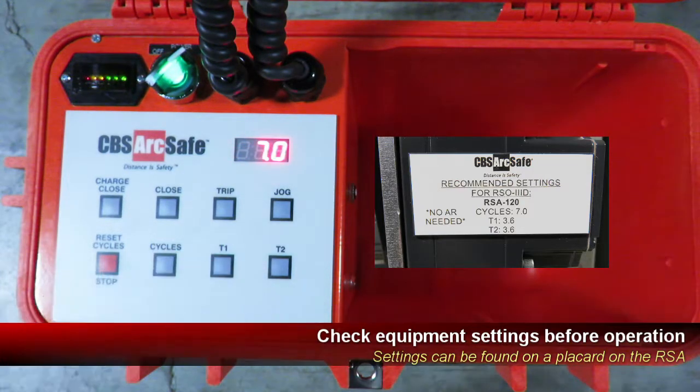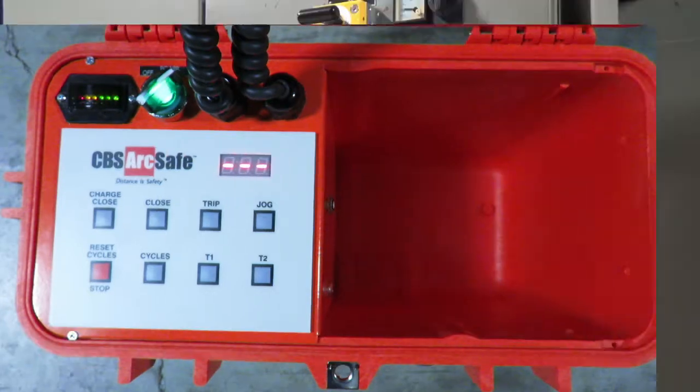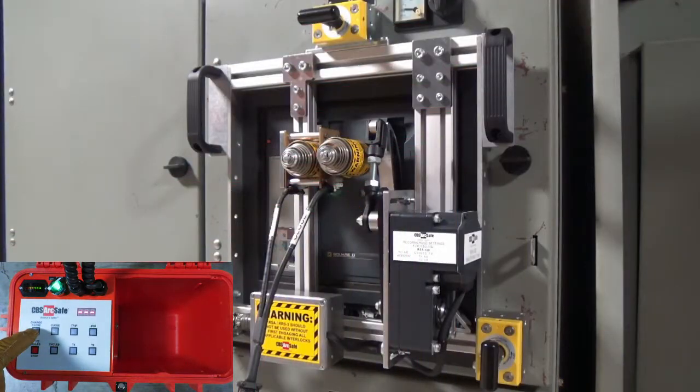Once the settings are correct, press the charge close button on the RSO to operate the handle and charge the operating mechanism.